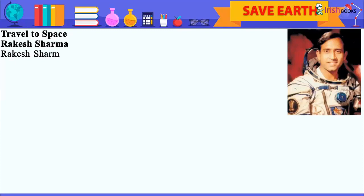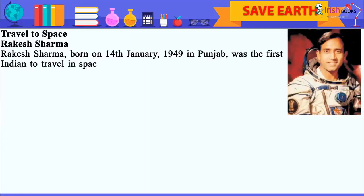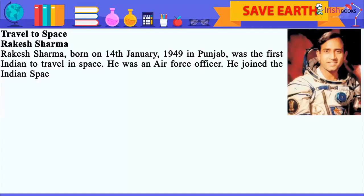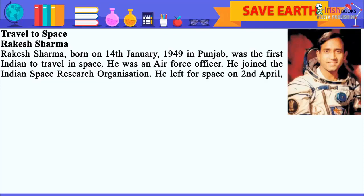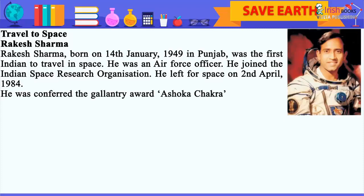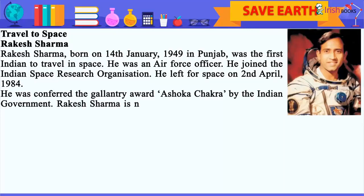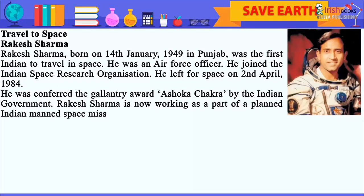Travel to Space — Rakesh Sharma: Rakesh Sharma, born on 14th January 1949 in Punjab, was the first Indian to travel in space. He was an Air Force officer who joined the Indian Space Research Organization. He left for space on 2nd April 1984. He was conferred the gallantry award, Ashoka Chakra, by the Indian government. Rakesh Sharma is now working as part of a planned Indian manned space mission.